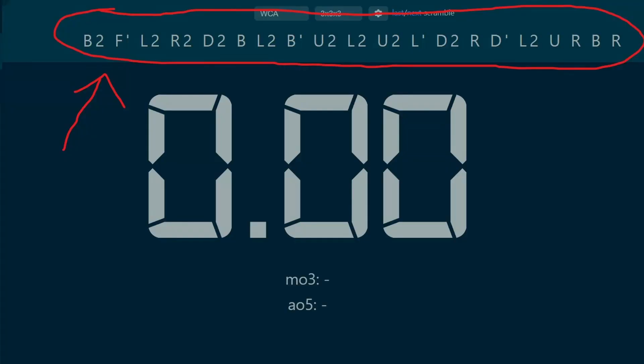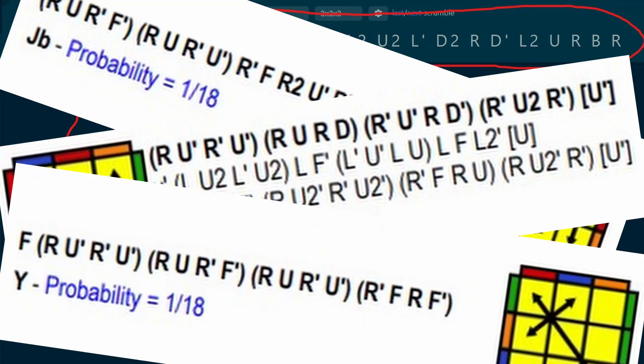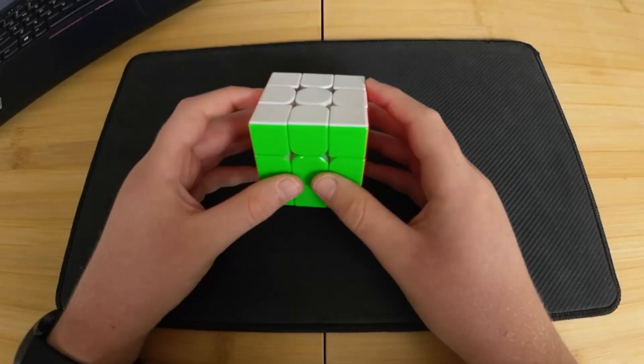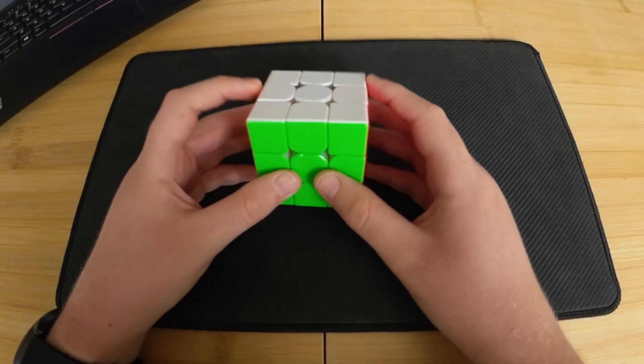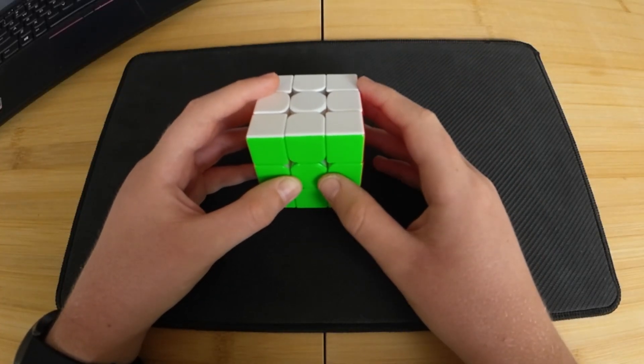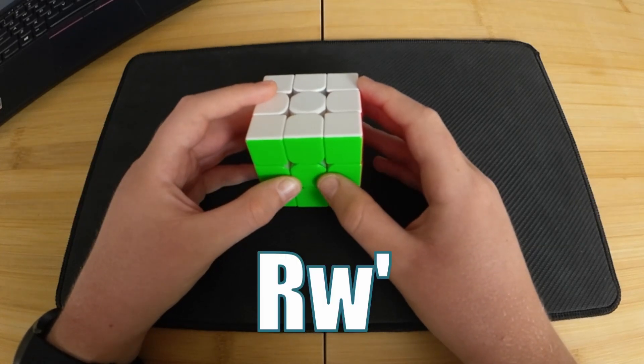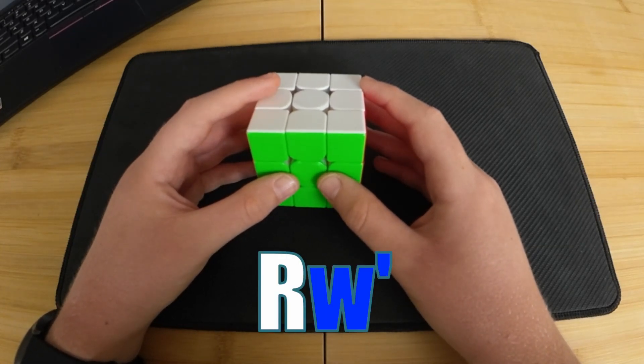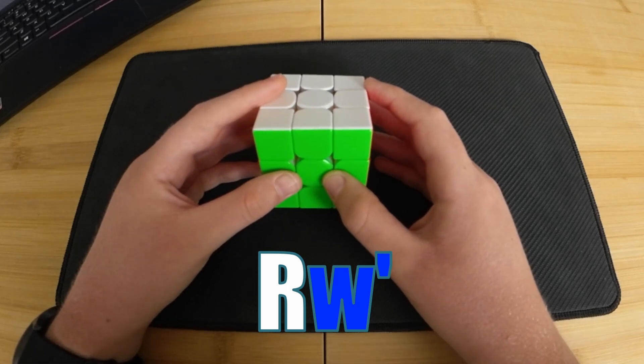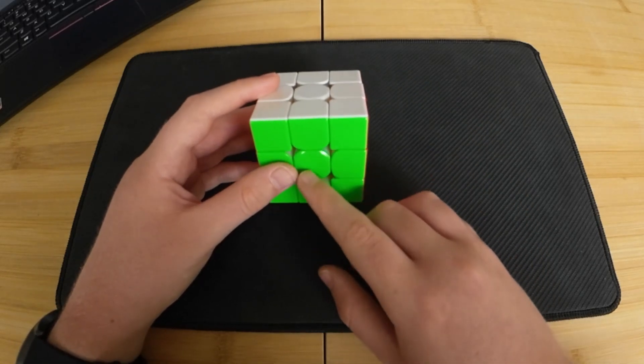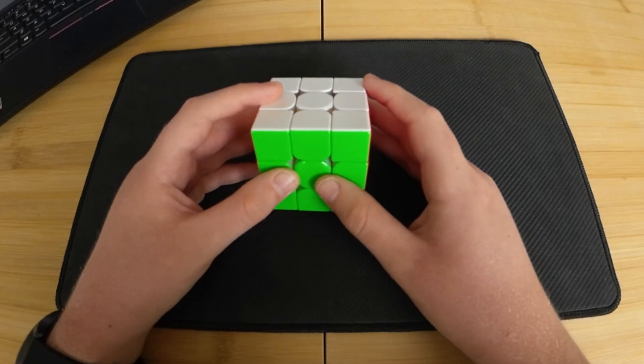Now you will be able to follow scrambles and basic algorithms, however there are two more things to know that can be found in more advanced algorithms. The first thing is called wide moves. If there is a w at the end of a move, then that means you have to do what is called a wide move. It just means that you have to grab the inner layer when you do the move as well.